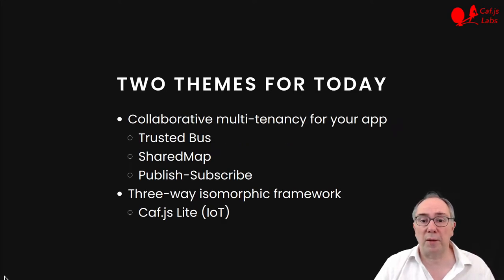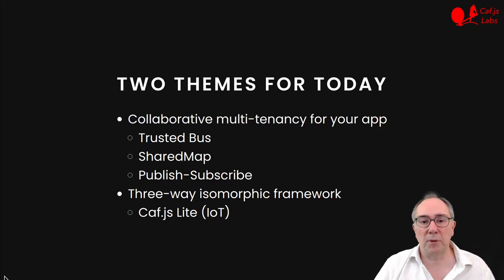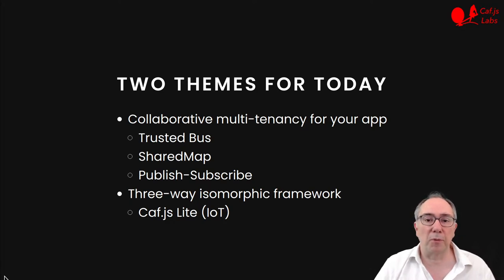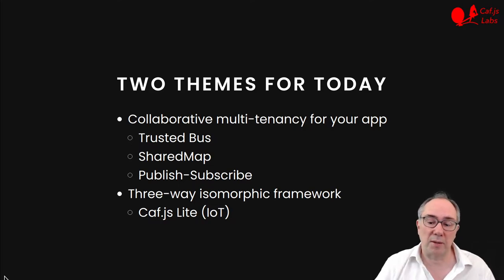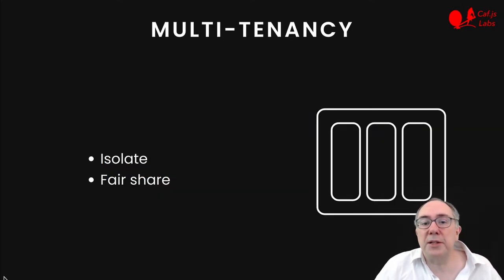Two themes for today. First, how to add collaborative multitenancy to your app using the trusted bus, and then two communication abstractions built on top of that bus: share map and publish subscribe. The second part of this talk is all about why the framework is three-way isomorphic and how to integrate devices using KVGS Lite.